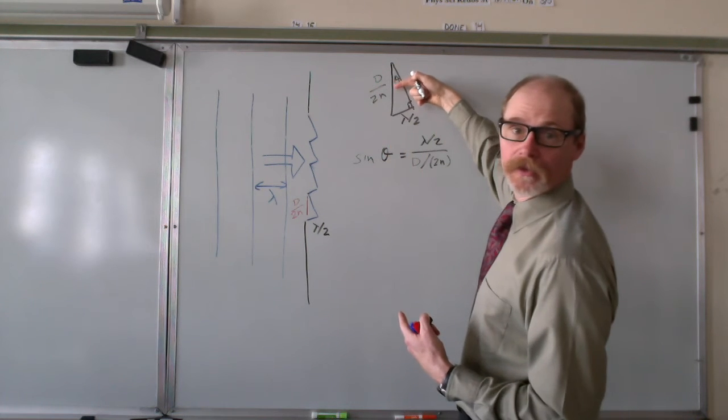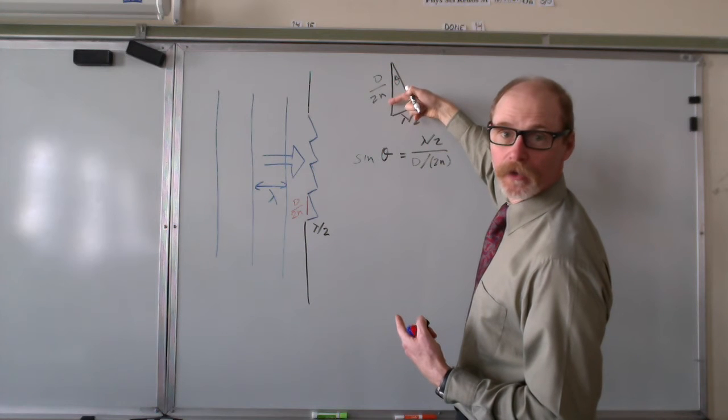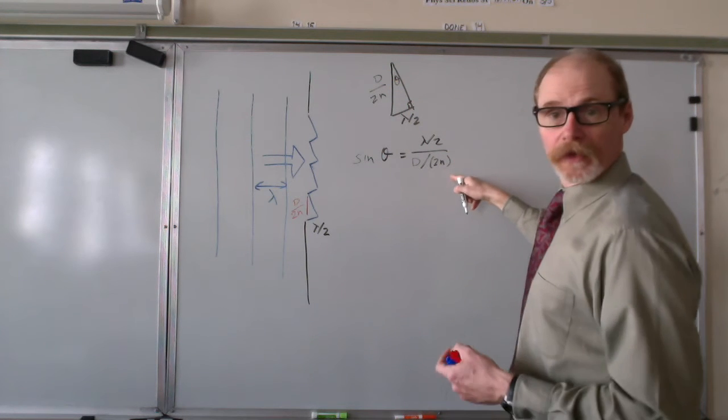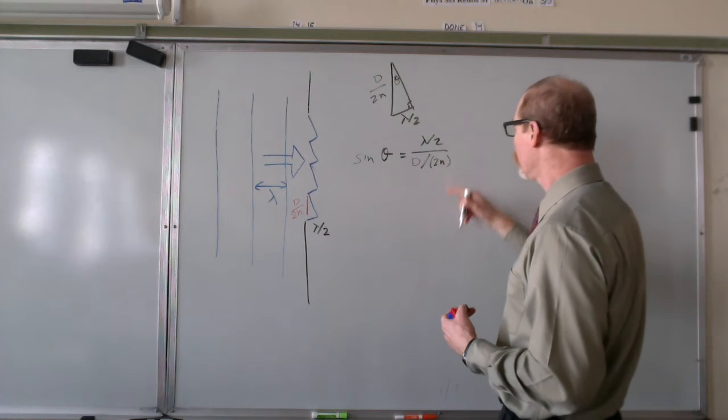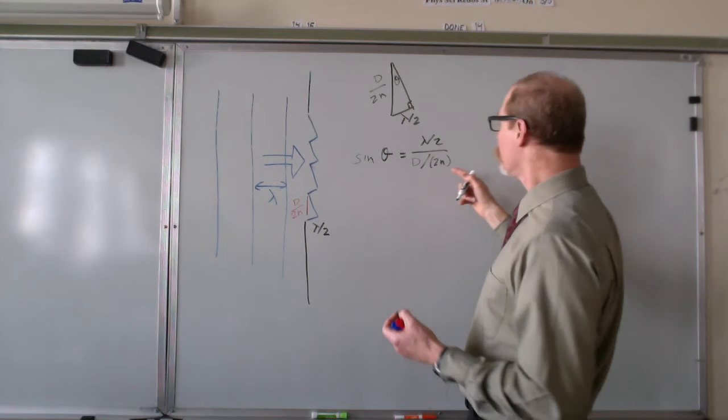And the dimension, the length of the hypotenuse is d over 2n. So we have this. This simplifies rather readily.